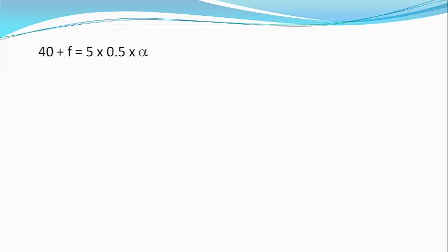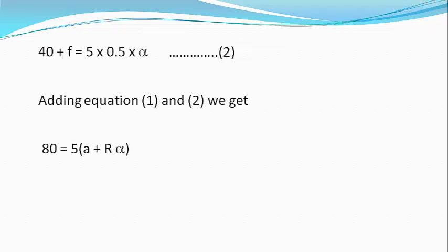Equation 2. Now adding equation 1 and 2, we get 80 equals 5 bracket starts A plus R alpha.